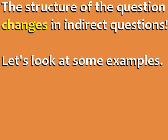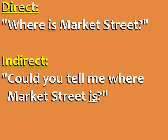The structure of the question changes in indirect questions. Let's look at some examples. Direct: 'Where is Market Street?' Indirect: 'Could you tell me where Market Street is?' In indirect questions, forms of the verb to be — like is, are, and were — come after the subject, not before the subject.